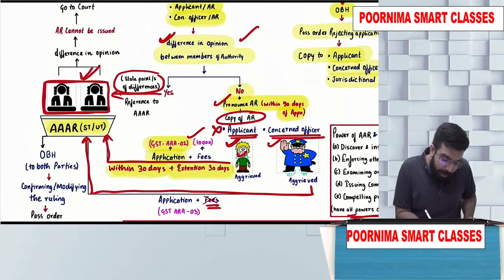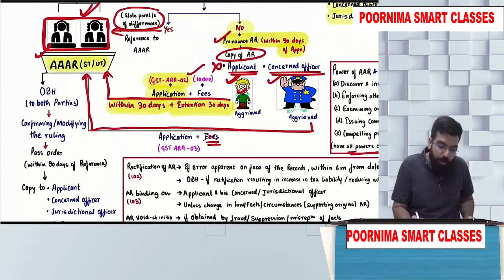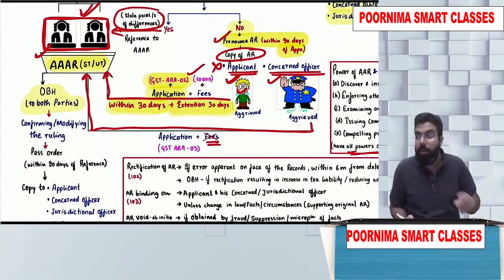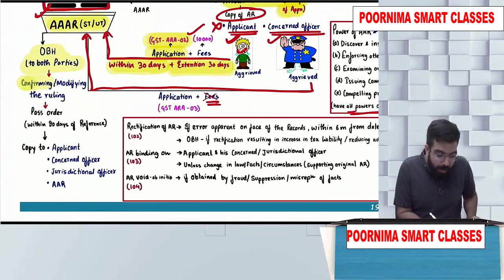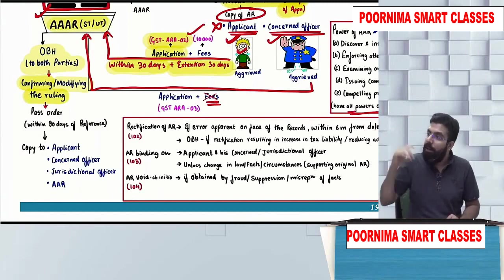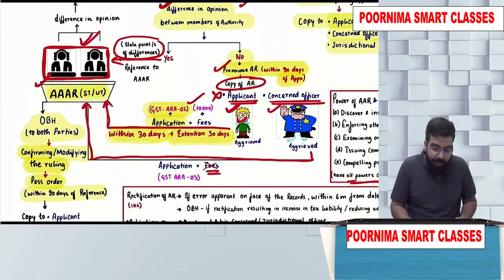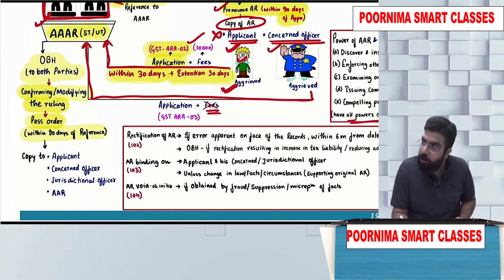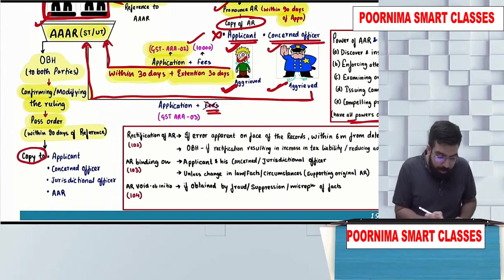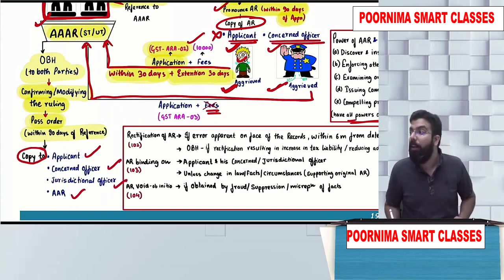Once the application is filed with the AAAR, they will give opportunity of being heard to the applicant and the concerned officer. They will either confirm the original advance ruling or modify the original advance ruling and pass the order within 90 days of reference or of the application filed by the applicant or concerned officer. A copy of the order is given to the applicant, concerned officer, jurisdictional officer, and the original Authority for Advance Ruling.